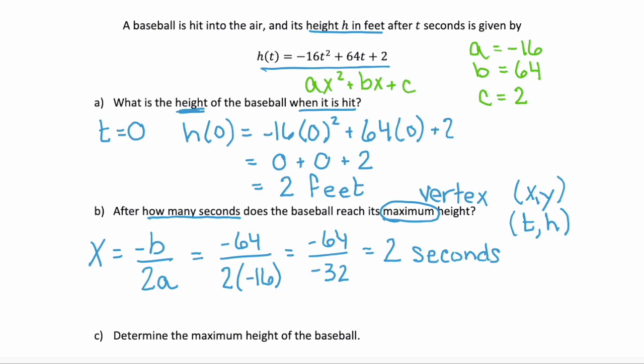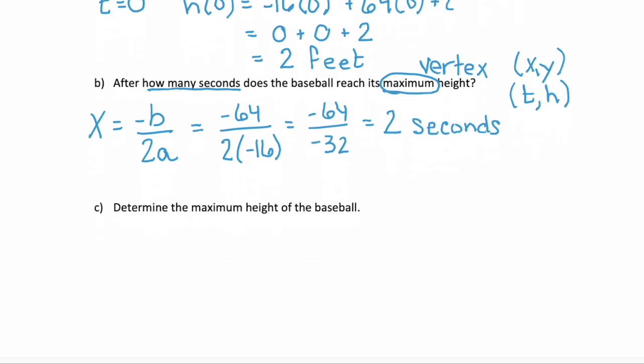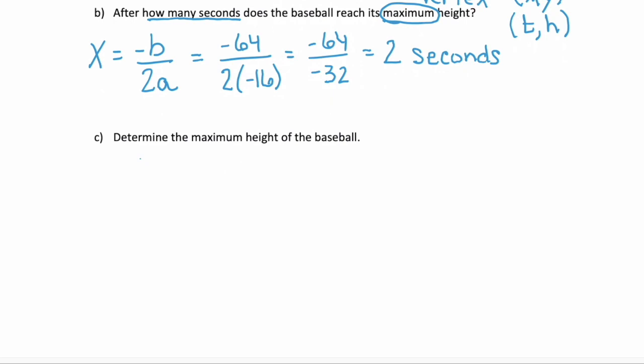And look at what Part C is asking. Part C wants us to determine the maximum height of the baseball. Again, maximum tells us we have a vertex. And height, if we look back at what our vertex is going to be, the height is our y value.